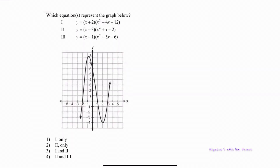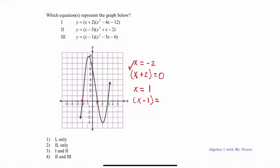In the following problem they want us to match the equation to the graph, and to do that properly we have to identify all the zeros. The first zero is x = −2; working backwards, the factor had to be x + 2 = 0. For the second zero, x = 1, the factor is x − 1. And for x = 3, the factor is x − 3 = 0. Once we understand that, we simplify and factor equations 1, 2, and 3 to look for those three factors.